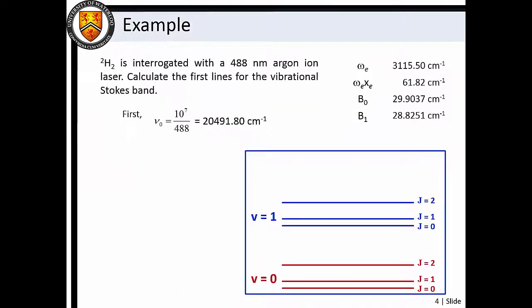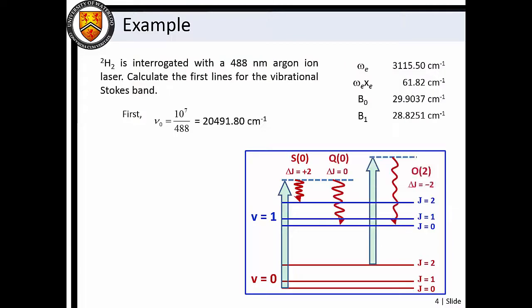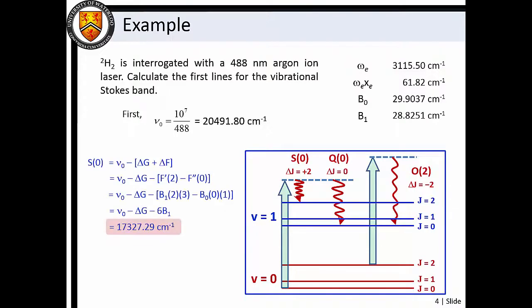Let's calculate the first lines for the vibrational Stokes band of H2 when it's probed with a 488 nanometer argon-ion laser. Recall that the first lines in the rotational branches are the S0, Q0, and O2. We calculate the wave number of the scattered light by subtracting the internal energy gained by the molecule from the incident photon wave number. Here we must consider vibrational and rotational energy.